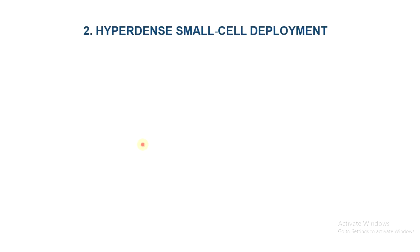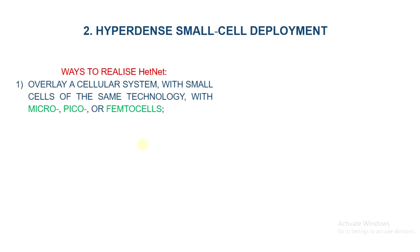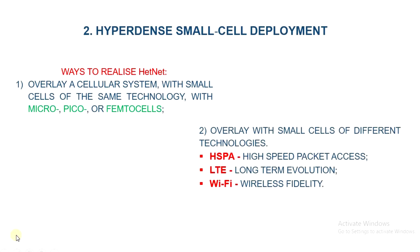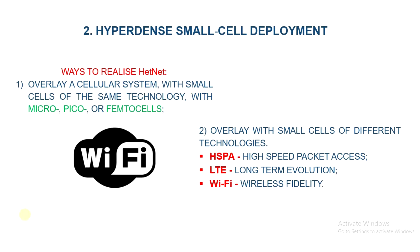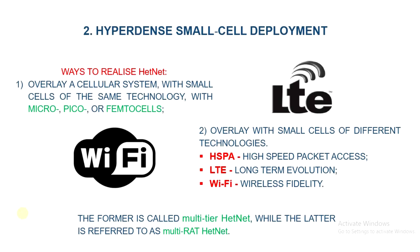In general, there are two different ways to realize HETNET. The first is by overlaying a cellular system with small cells of the same technology — that is, with micro, pico, or phantom cells. The second is by overlaying with small cells of different technologies, such as High-Speed Packet Access (HSPA), Long-Term Evolution (LTE), and Wi-Fi. The former is called multi-tier HETNET, while the latter is referred to as Multi-RAT HETNET.